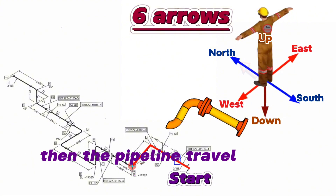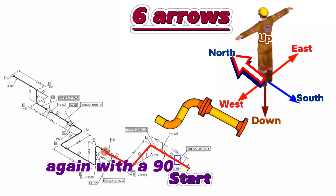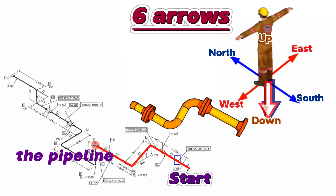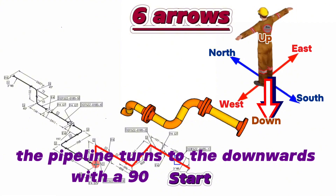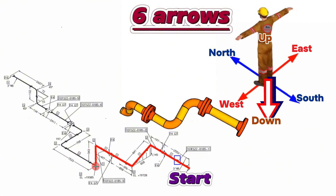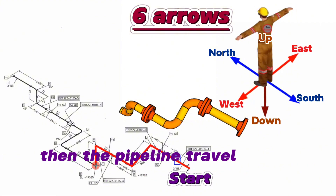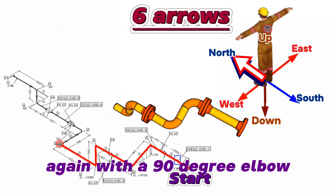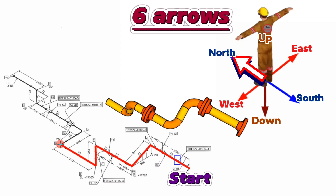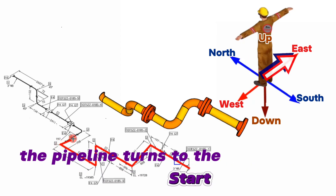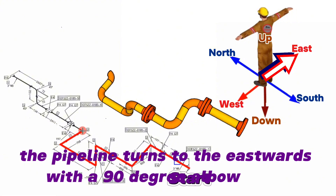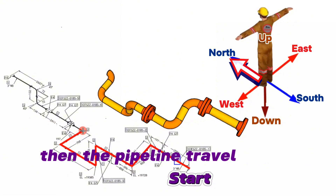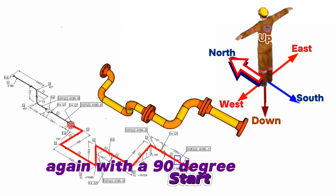At this point the pipeline first turns downwards, then turns eastwards. Then the pipeline travels northwards with a 90-degree elbow. At the next point the pipeline turns downwards with a 90-degree elbow, then travels northwards again with a 90-degree elbow.